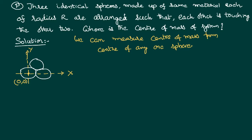Instead of three extended bodies, we imagine three point masses, each located at the centre of the corresponding sphere. Since mass is not given in the problem, we use density: mass equals density times volume, so mass equals (4/3)πr³ρ. This value is the same for all three spheres — m1 = m2 = m3 = (4/3)πr³ρ.